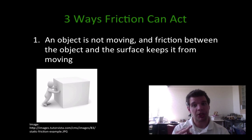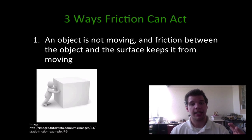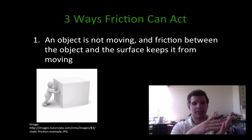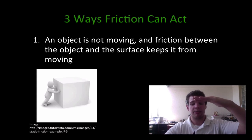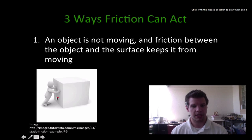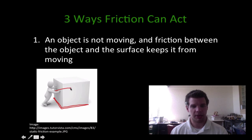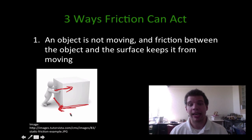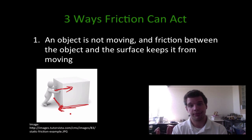There are three ways that friction can actually act. The first one is that an object is not moving and the friction between that object and the surface actually keeps it from moving altogether. So if you have a person pushing a box that's in contact with the ground, he's applying a big force to move this box, but friction is actually working against him and prevents the box from moving at all.